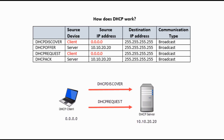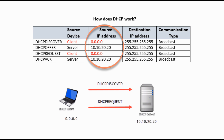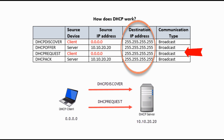For example, when a client computer boots up, it broadcasts DHCP Discover and DHCP Request packets to ask a DHCP server for an IP address. The client's source address is specified as 0.0.0.0, which means the client computer does not have an IP address. You may notice that when the destination IP address is 255.255.255.255, the packets are broadcast.